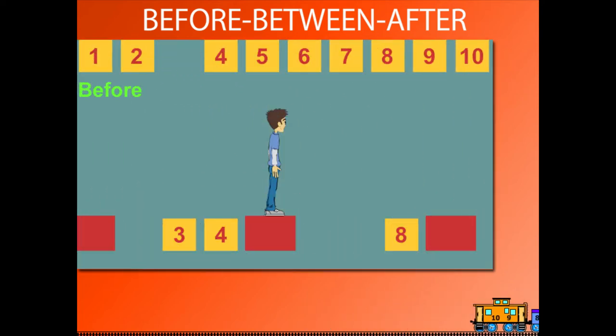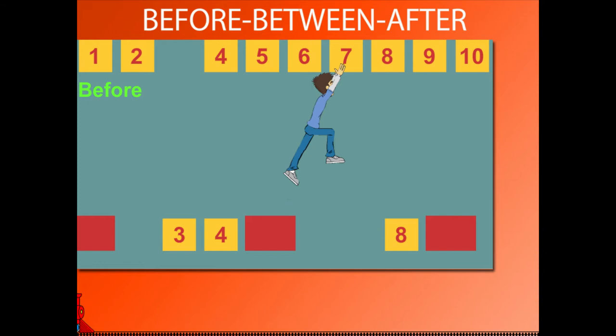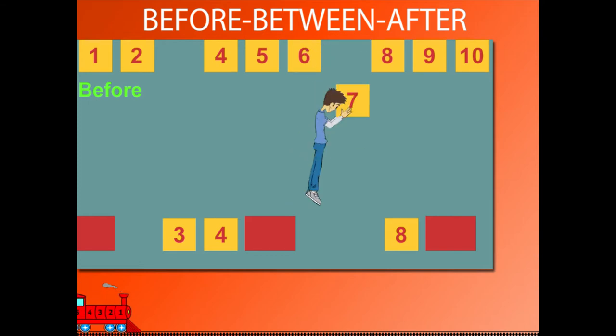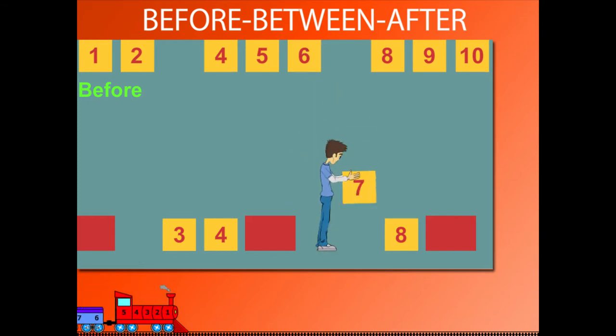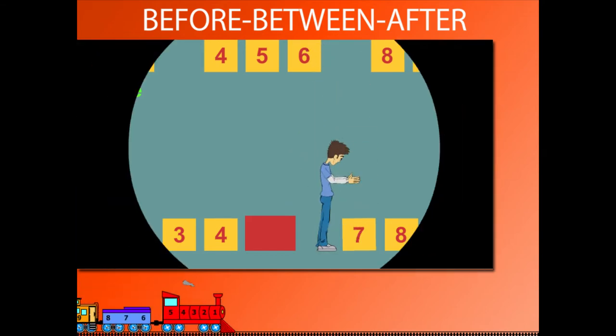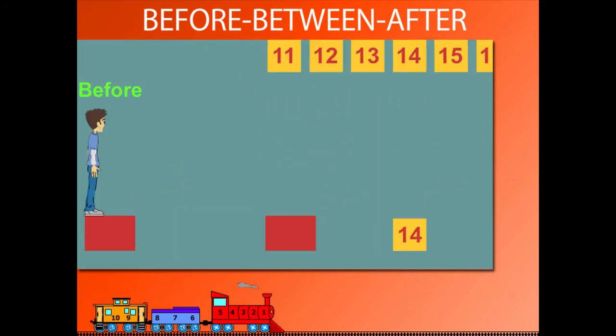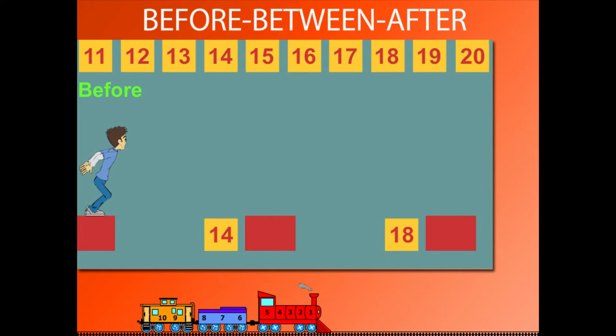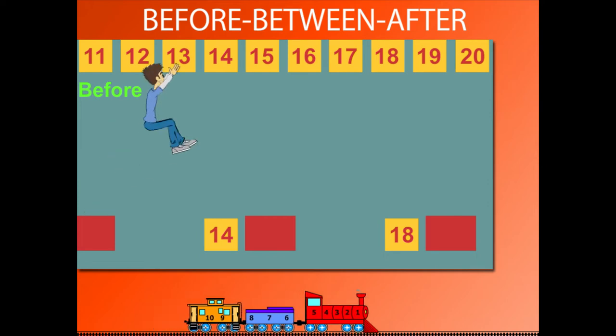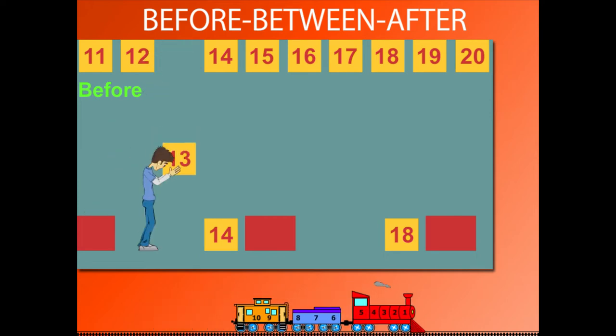Now what comes before 8? Sammy jumps and pulls down 7. What comes before 14? It is 13.